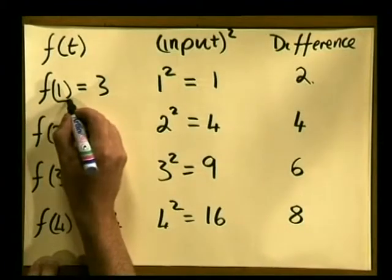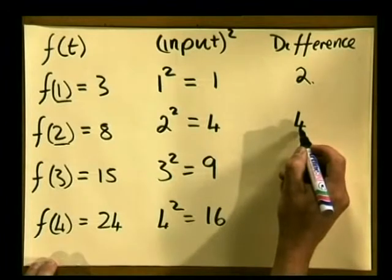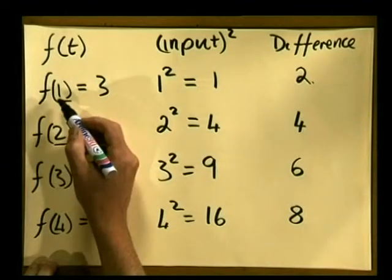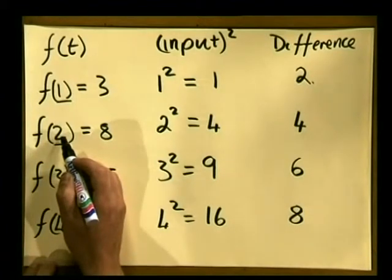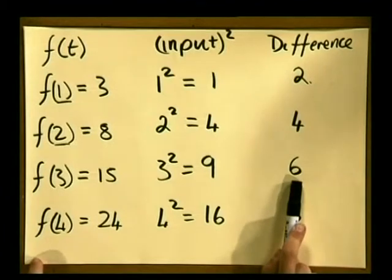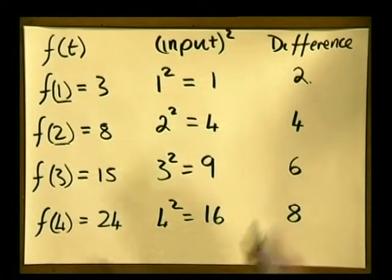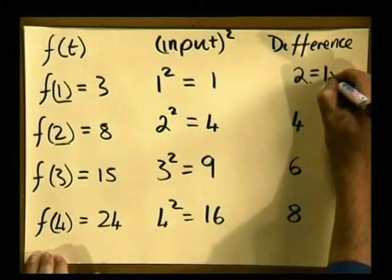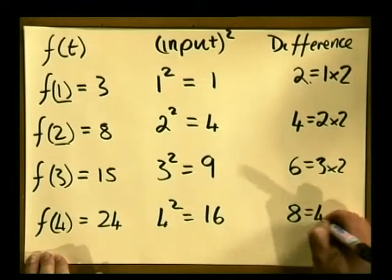Do you see a pattern? Look at the difference and compare it to each input value. What is the relationship between the input value of 1 and the difference of 2? And what is the relationship between the input value of 2 and this difference of 4? Do you notice that the input value of 1 can be multiplied by 2 to get to the difference? Let's check the other values. 6 is indeed 3 times 2 and 8 follows the same pattern because it is 4 times 2. So, in each case, this answer here for the difference is given by the input value multiplied by 2.